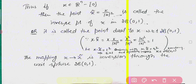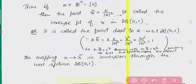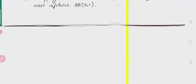We observe that the mapping x → x̃ is called the inversion through the unit sphere. The unit sphere here is the surface of the ball B(0,1). So the inversion of x through the unit sphere is defined in this way.